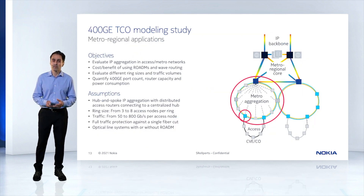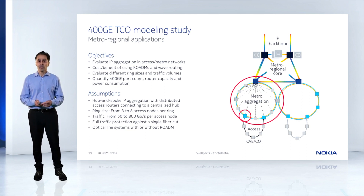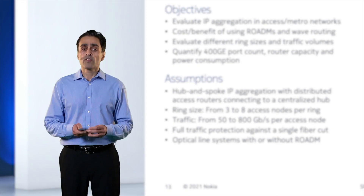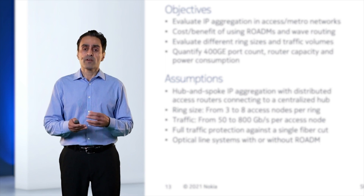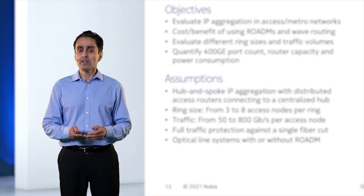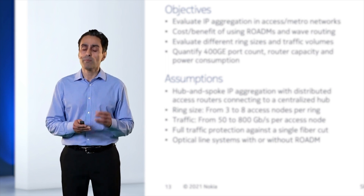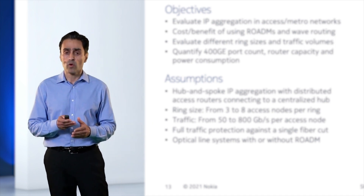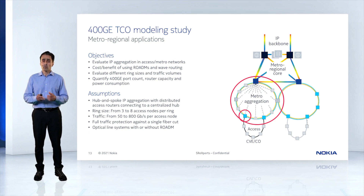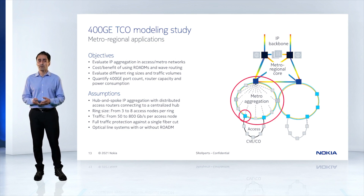We have a simple ring that includes eight access routers plus one hub router. One assumption we are making in this model is that the traffic is fully protected — if the primary path fails, there's always a backup path. We're also going to consider multiple cases for traffic growth, starting from 50G and going all the way up to 800G.